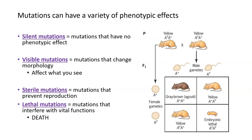So we can describe mutations by where they occur in the body and which type of cells, by how they're induced in the first place — whether they're spontaneous or induced by some kind of mutagen — and we can also describe them in terms of what they do phenotypically to an organism.